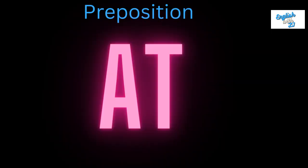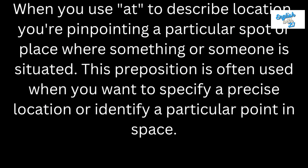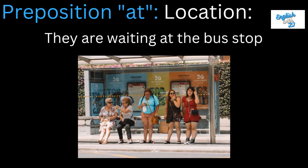Preposition 'at.' When you use 'at' to describe location, you're pinpointing a particular spot or place where something or someone is situated. This preposition is often used when you want to specify a precise location or identify a particular point in space. For example, these people are waiting at the bus stop — they are waiting for the bus at the bus stop.